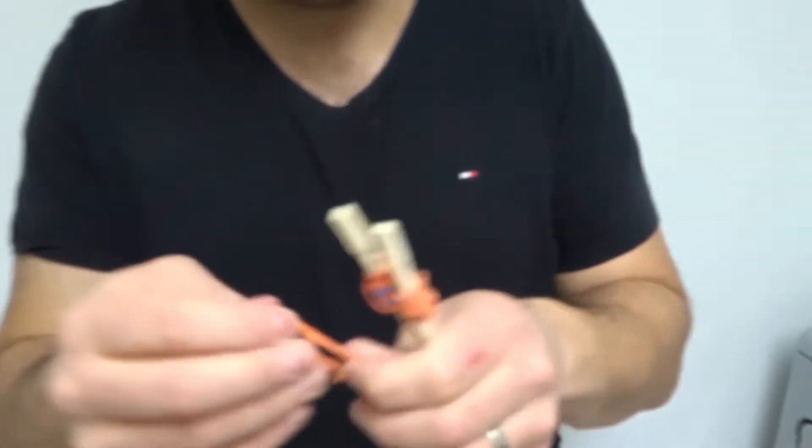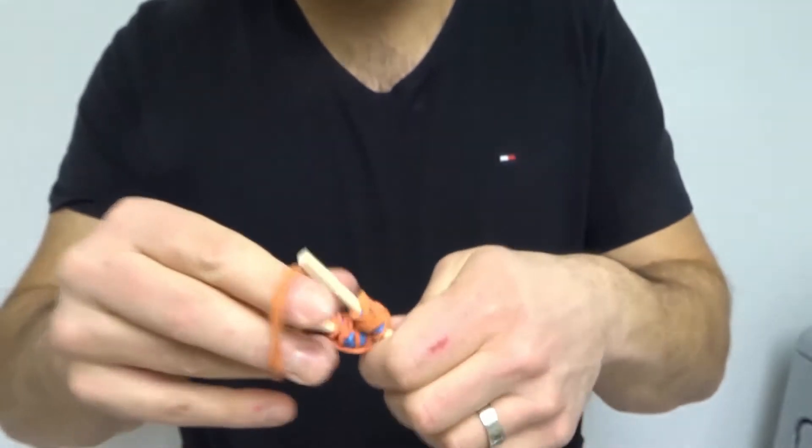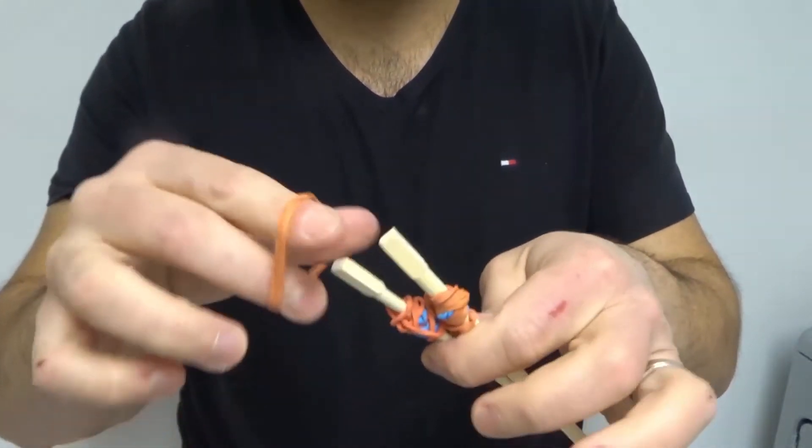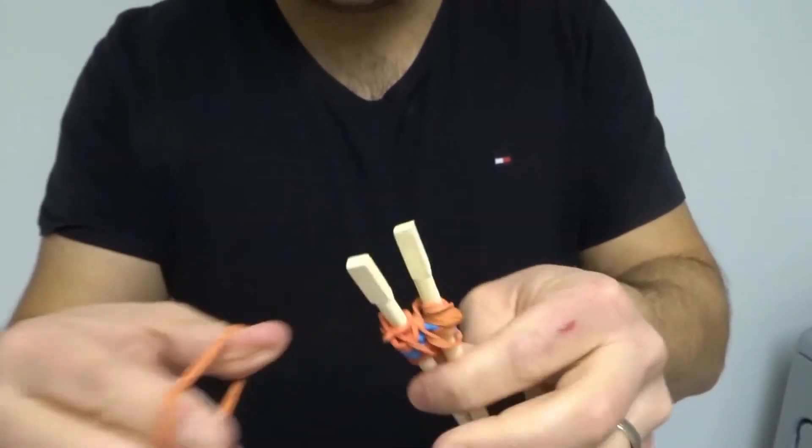All we have to do now is take another rubber band and put it around both of the chopsticks. So the rubber bands on each chopstick are lined up. We're gonna place this rubber band around both of them, sort of at the top here.